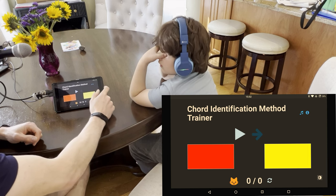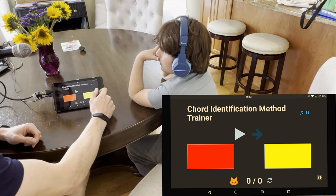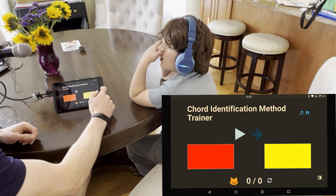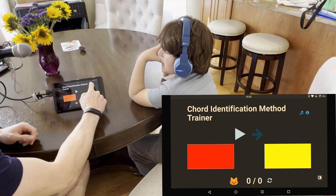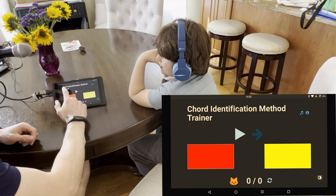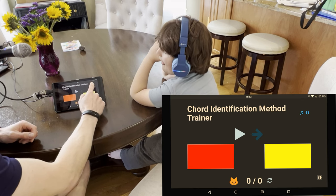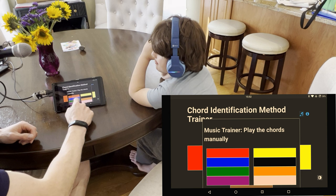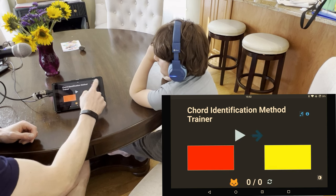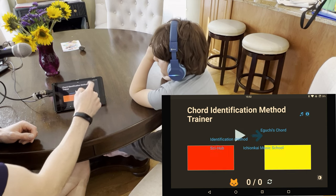Alright, so this is the chord identification method trainer. The way it works is that the kids are supposed to identify chords. There are nine of the chords, and there's a little information about exactly what you're supposed to do here.